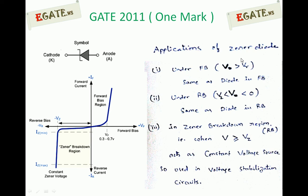For applications: under forward bias (V > Vγ), the Zener diode acts like an ordinary diode — ideally a short circuit or an ON switch. Under reverse bias (voltage between –Vz and 0), it acts like an ordinary diode — ideally open circuit, with a small reverse saturation current in the nano-ampere range for silicon, and the entire voltage drops across the Zener diode.